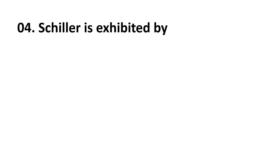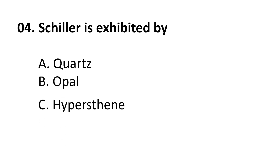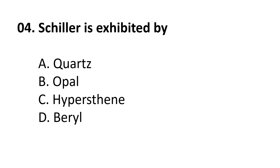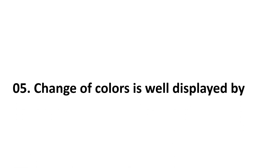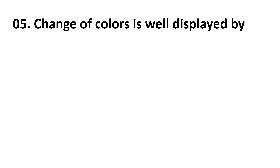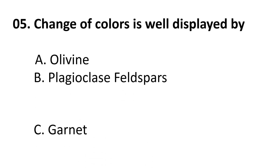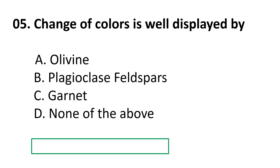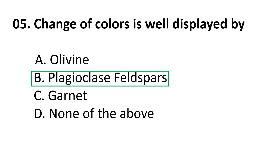Question 4 covers schiller, which is exhibited by plagioclase feldspar. Plagioclase feldspar exhibits a change of colors in a broader spectrum — this is the schiller effect.